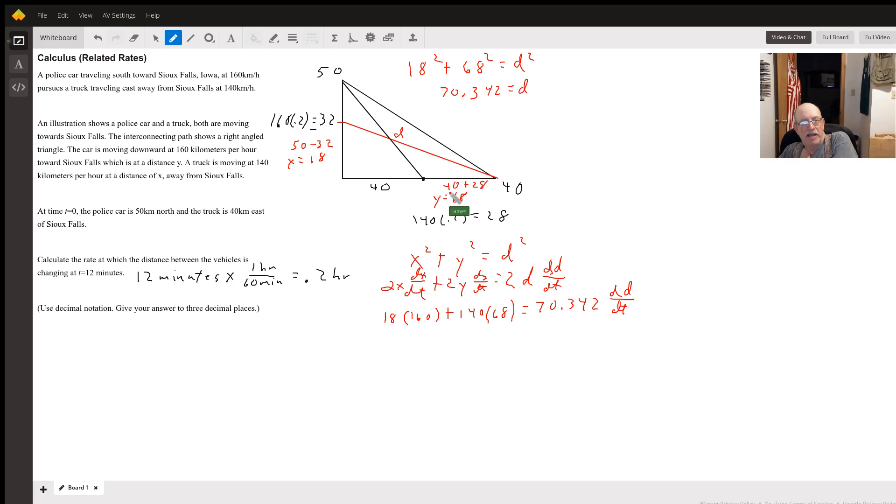The truck went 28 kilometers in those two tenths times 140, so he's 68 miles east of Sioux Falls. We need to figure out what d is at 12 seconds so we do the Pythagorean theorem. We get d is 70.342.